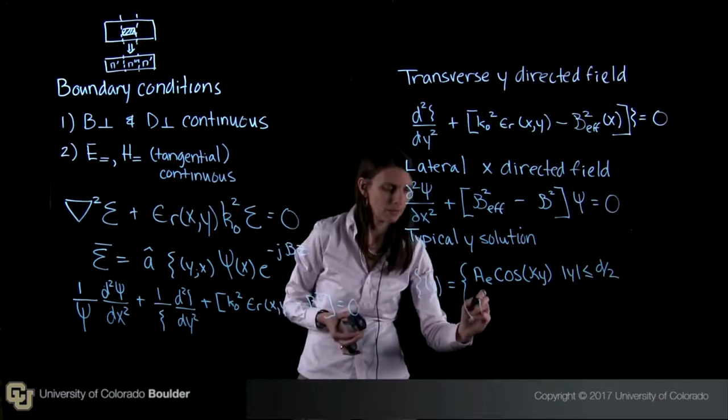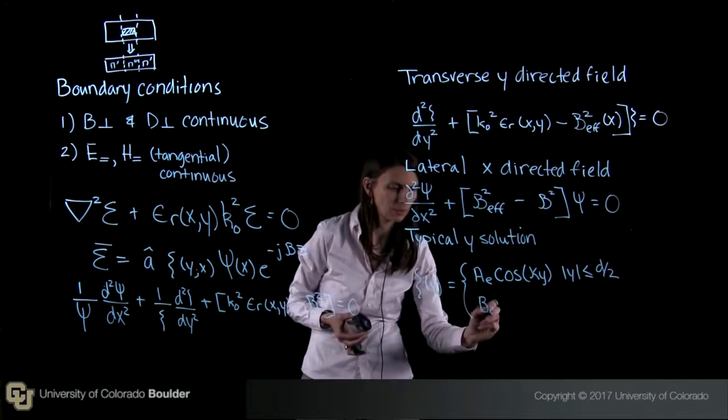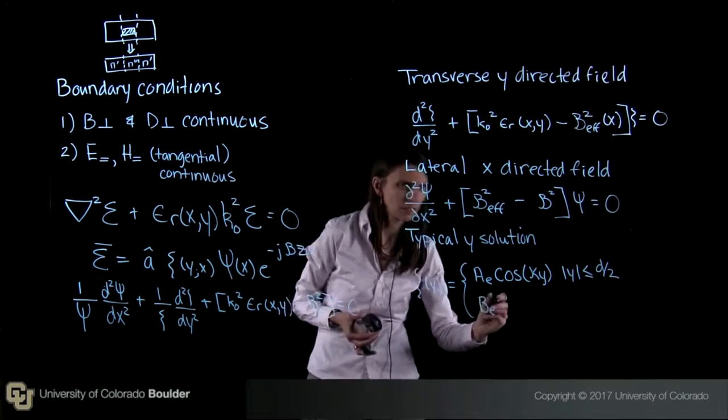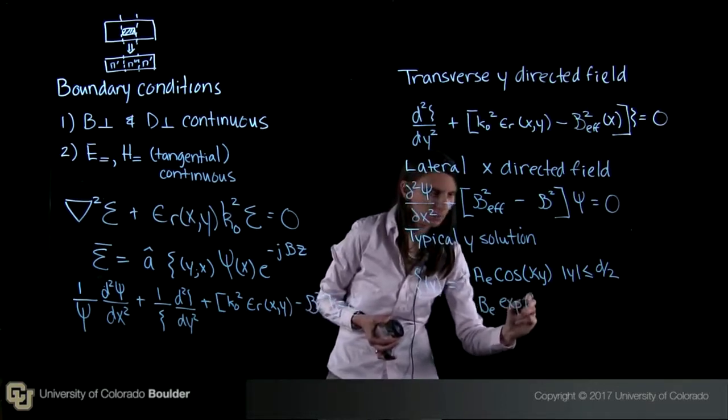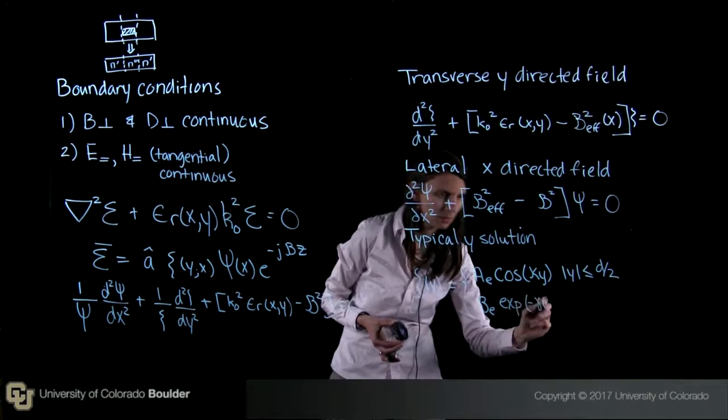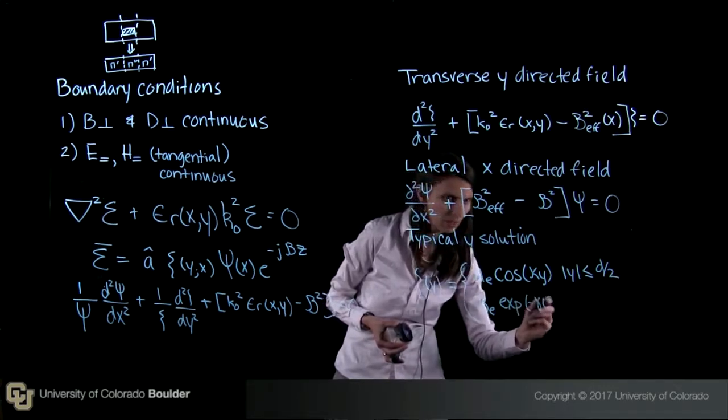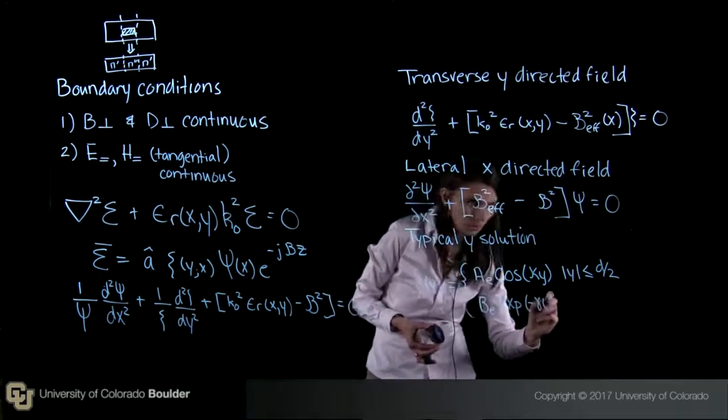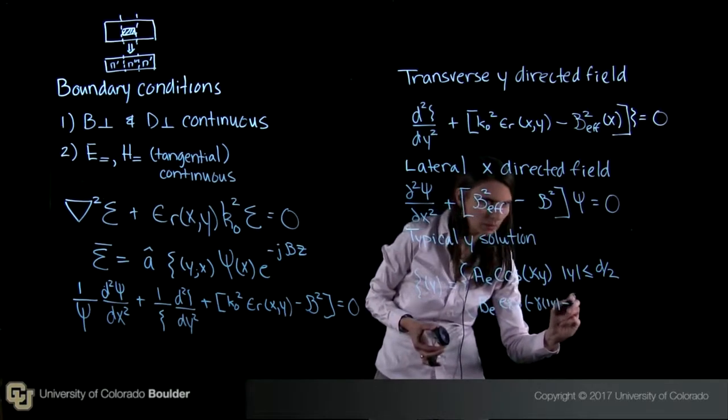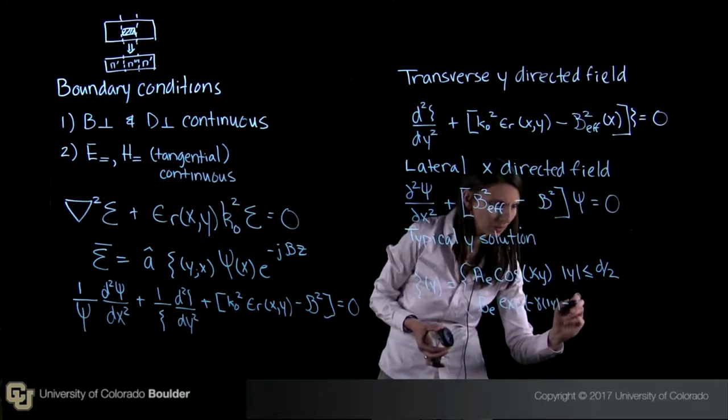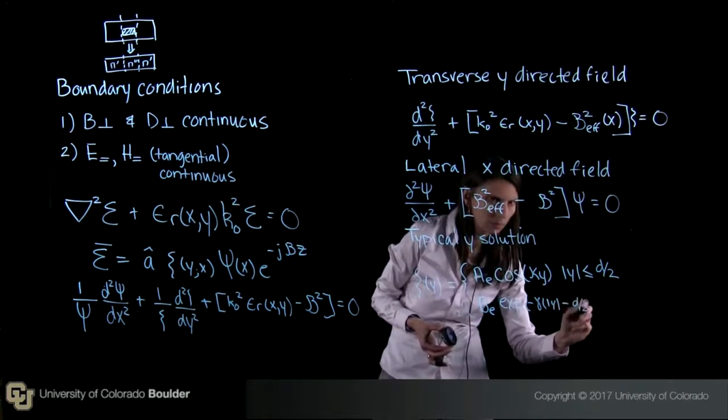And then outside the layer, it's going to be equal to be e. Again, this is a constant. And then exponential of minus gamma of, and then y, absolute value of y minus d over 2.